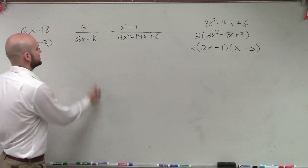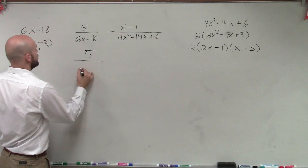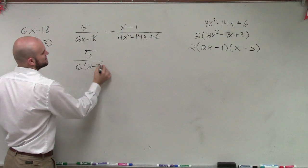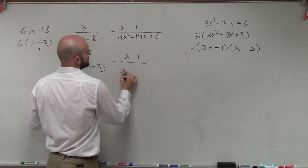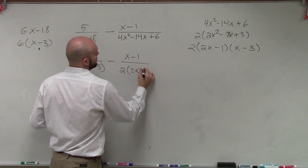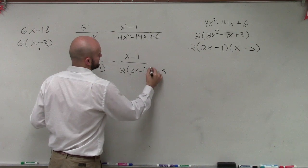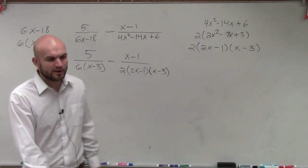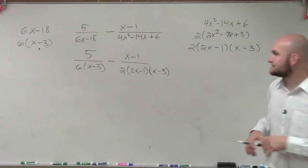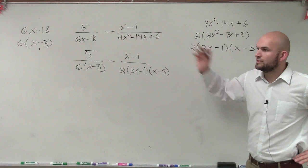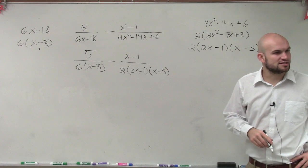So now let's rewrite this in factored form. I have 5 over 6 times x minus 3 minus x minus 1 over 2 times 2x minus 1 times x minus 3. Now we have it written in our factored form.